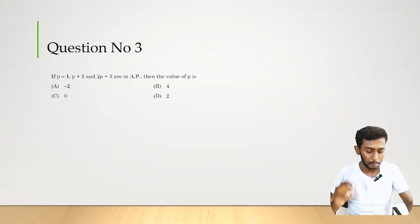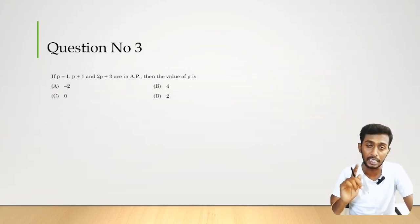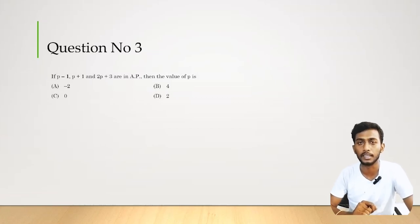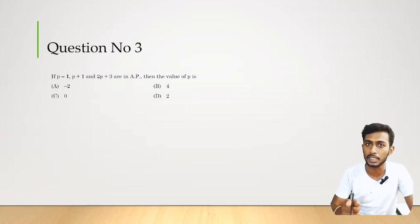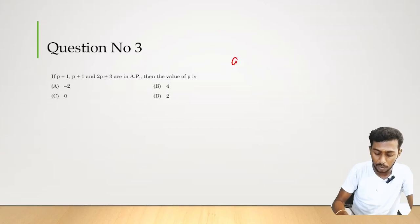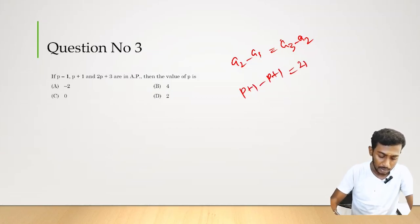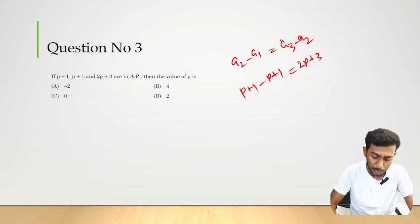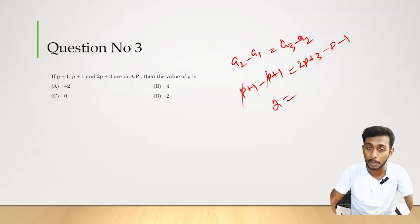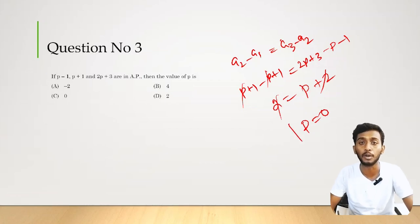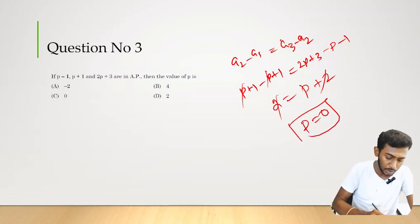Question number 3. p−1, p+1, 2p+3 are in AP. For three terms in AP, the common difference condition is a2 − a1 = a3 − a2. So (p+1) − (p−1) = (2p+3) − (p+1). Left hand side: 2. Right hand side: 2. p cancels, giving p = 0. Therefore value of p is 0. Option C is the correct answer.